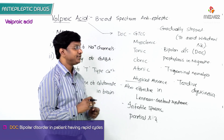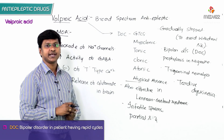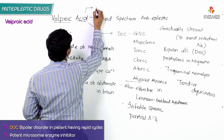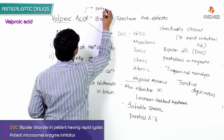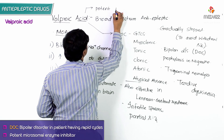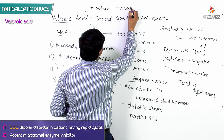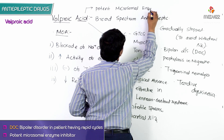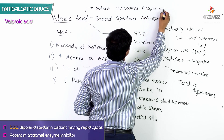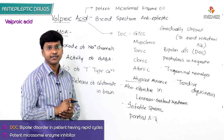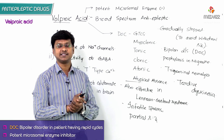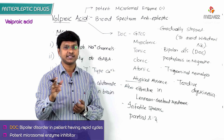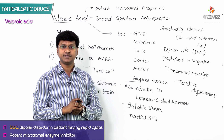Regarding metabolism, valproic acid is a potent microsomal enzyme inhibitor. Because of this, utmost care must be taken regarding drug-drug interactions when valproic acid is co-administered with other drugs.